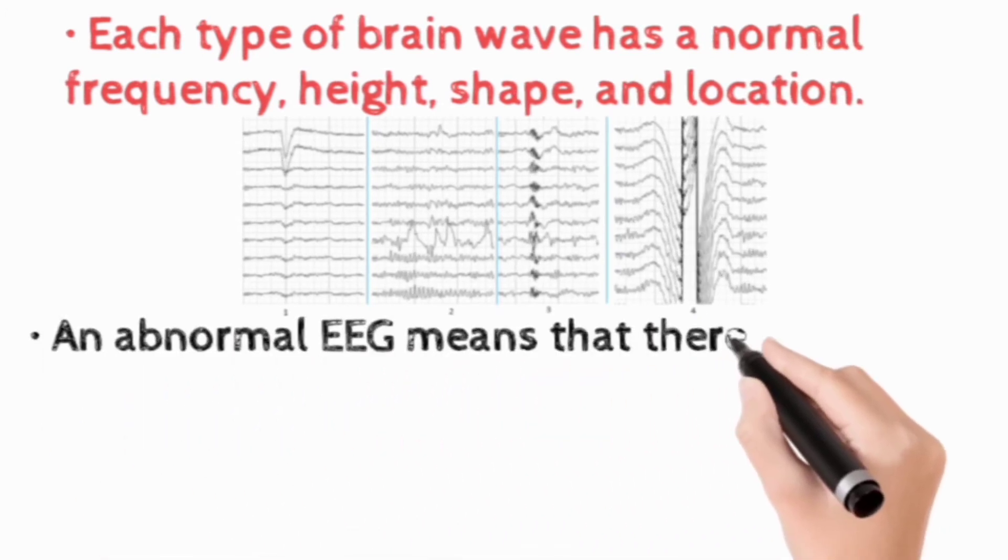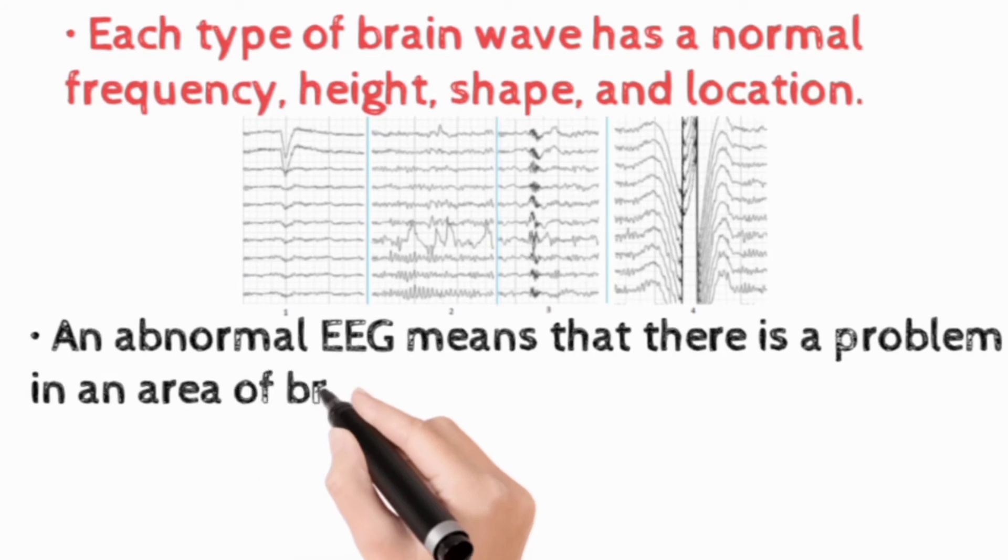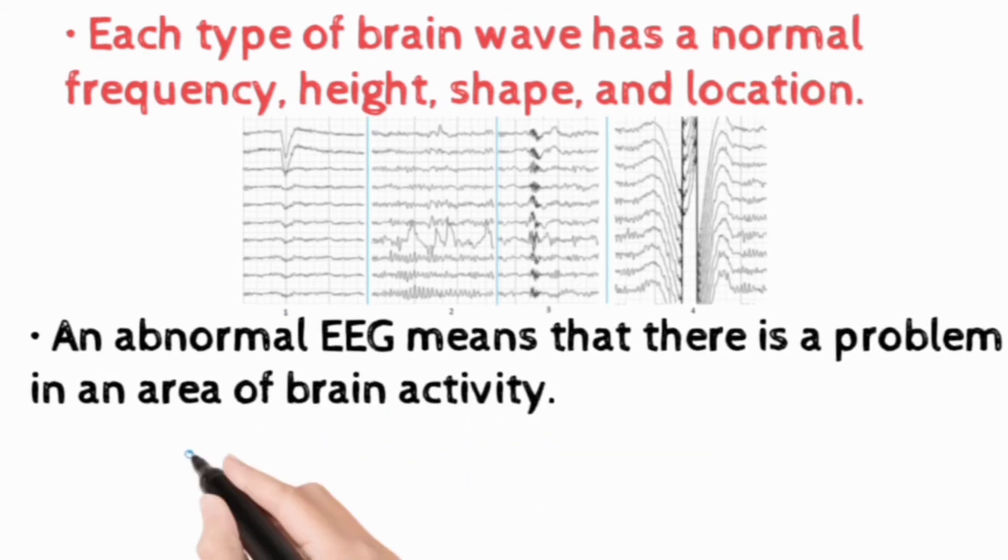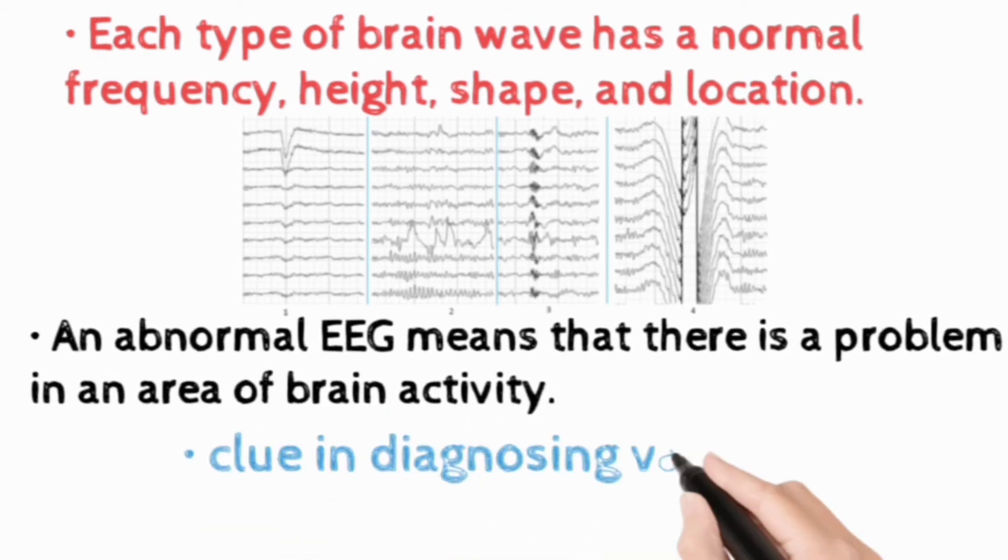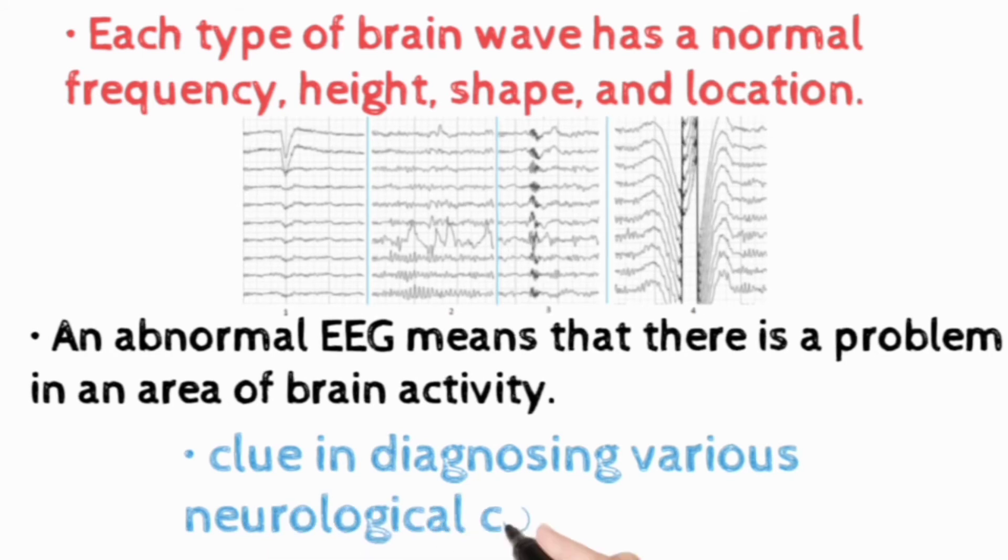Abnormal EEG means there is a problem in the area of brain activity. So this can offer a clue in the diagnosis of various neurological conditions.